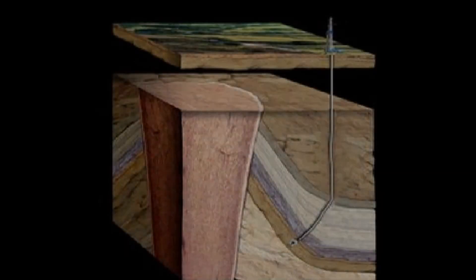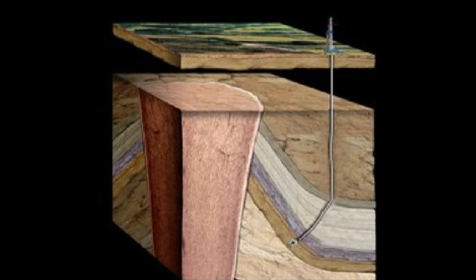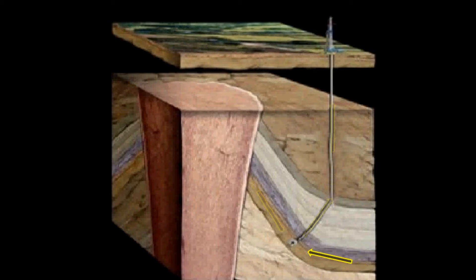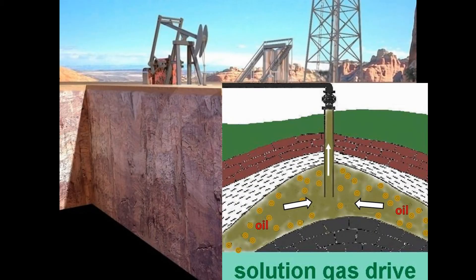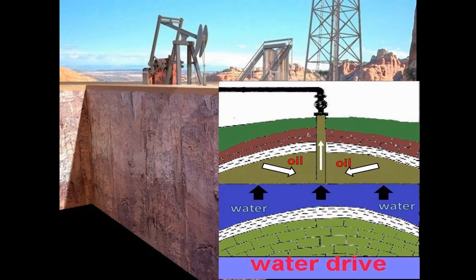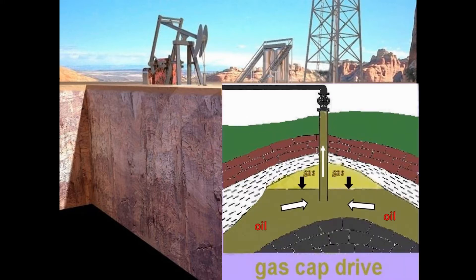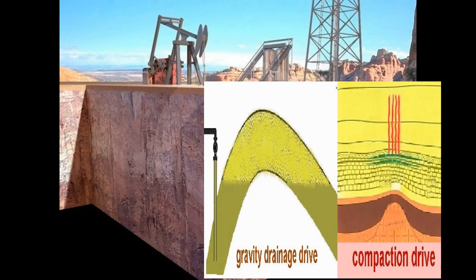As you can see, natural energy sources for primary recovery in oil reservoirs use the natural forces found within the reservoir. The volatility of gas in solution gas, the fluid properties of water to flow into an empty space in a water drive, and the fluid properties of gas to expand in a gas cap drive are examples. In addition, gravity and compaction, also common forces, can be utilized to energize drives.